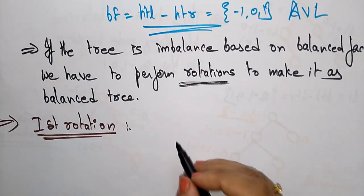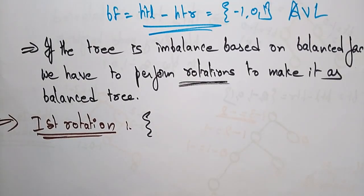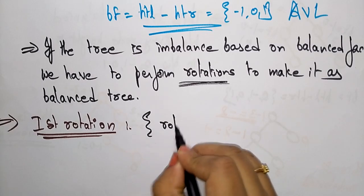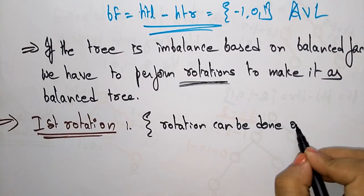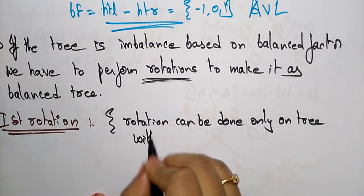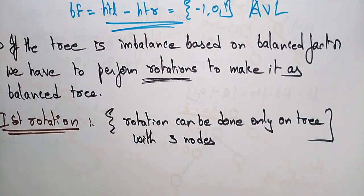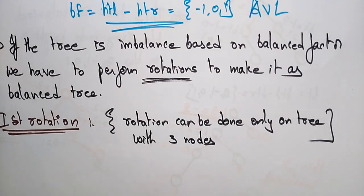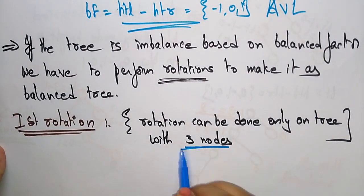Let's take an initial tree. One thing you have to remember: rotations can be done only on a tree with three nodes. This is the standard. So if your tree has more than three nodes, just split the tree and first rotate by taking three nodes. After that, perform rotation again on the another three nodes.